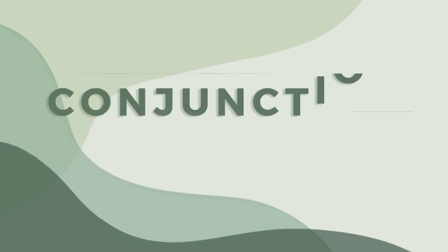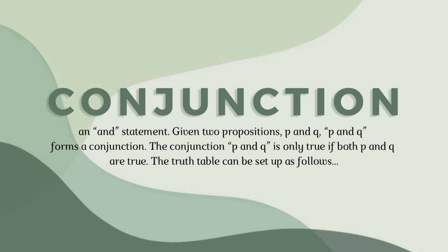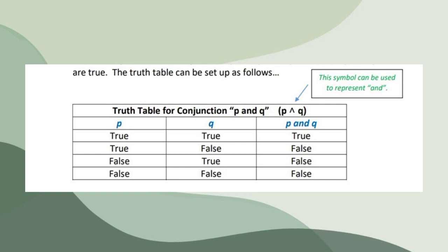Now let's proceed to conjunction. An AND statement given two propositions P and Q. P and Q forms a conjunction. The conjunction P and Q is only true if both P and Q are true. The truth table can be set up as follows.